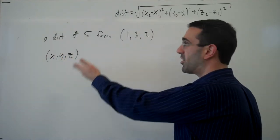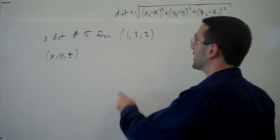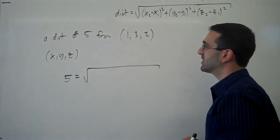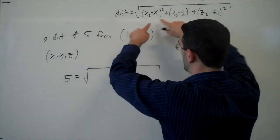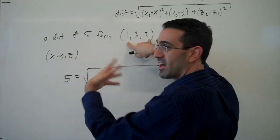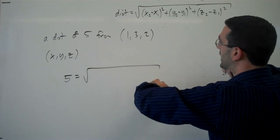And we want to describe all the points that are a distance of 5 from here. So, using the distance formula, we want a distance of 5, and so we can use the center point here, along with the other point on our sphere here, to set up our equation.